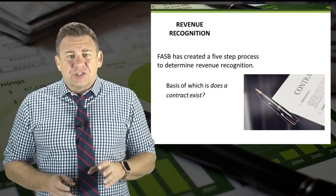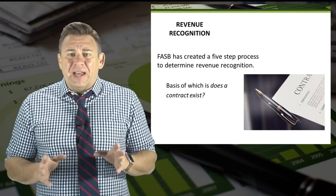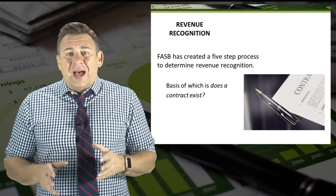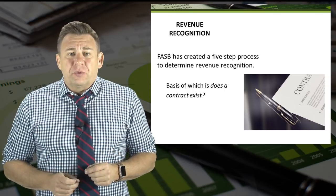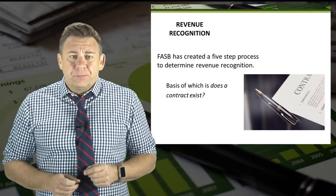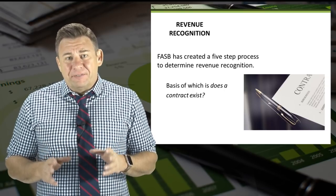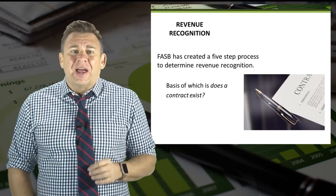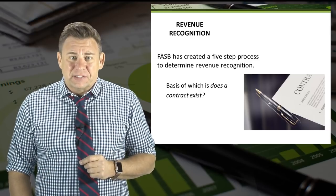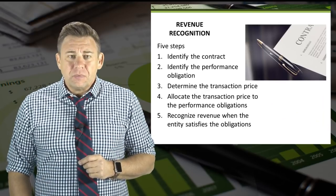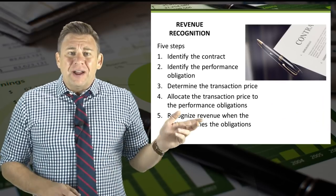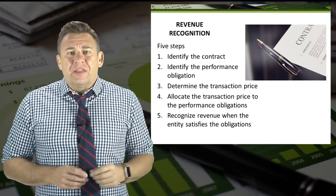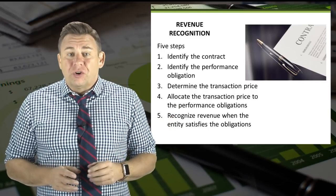The FASB has created a five-step process to determine whether or not revenue should be recognized. The basis of the five-step process is whether or not a contract exists. Here I've listed the five-step process — let's look at each one of these in more detail.